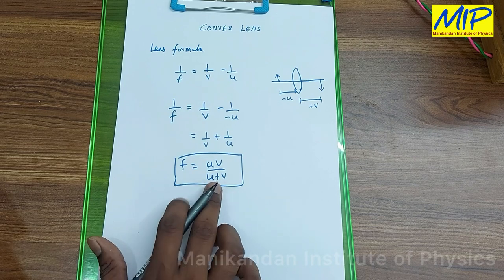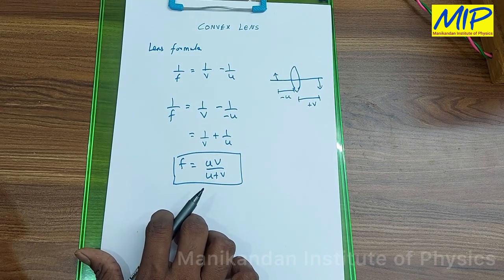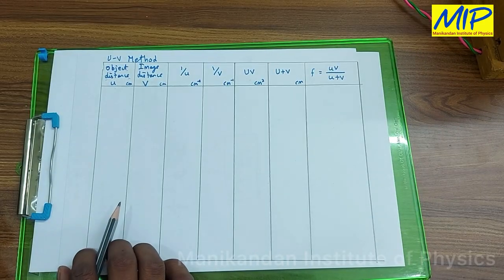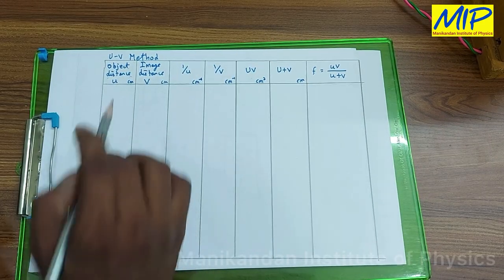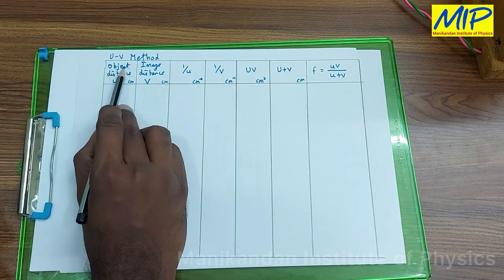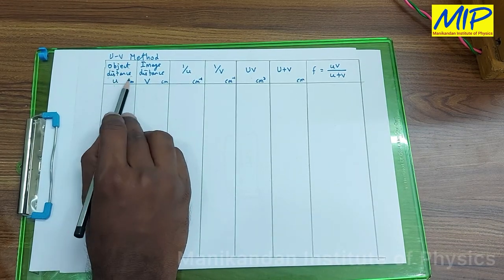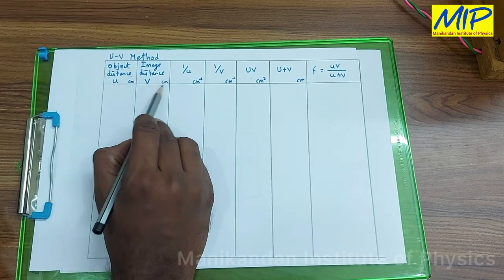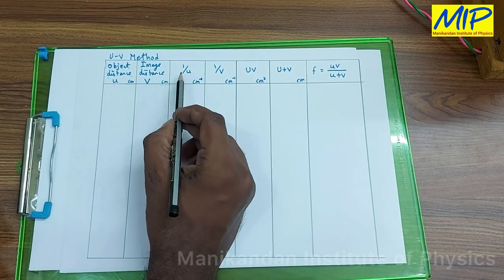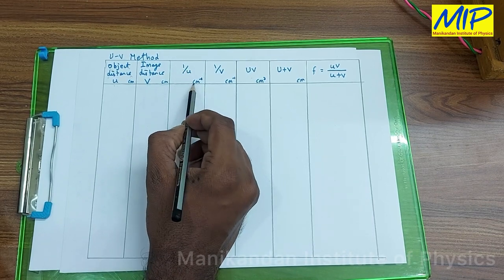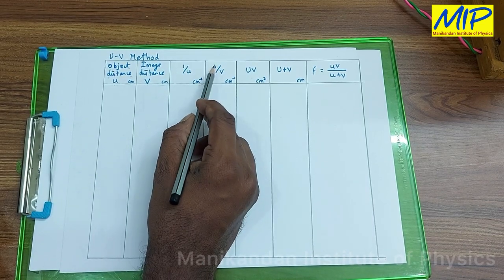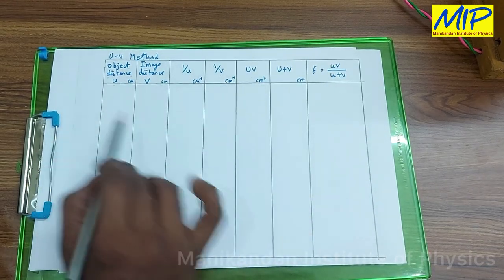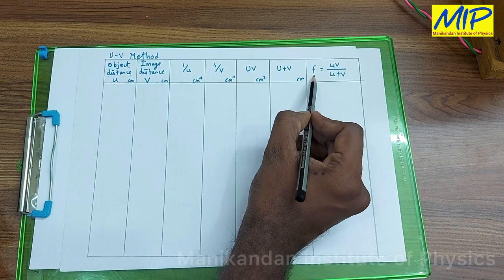Using this table I'm going to measure the readings. The first column is object distance u in centimeters, the second column is image distance v in centimeters, the third column is 1/u in centimeter inverse, and the fourth column is 1/v. Using these parameters I am able to find the focal length.